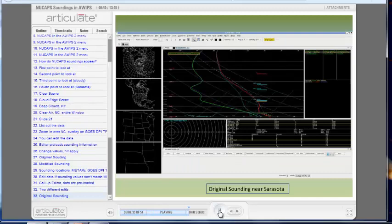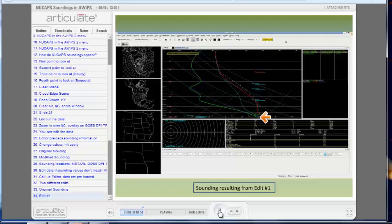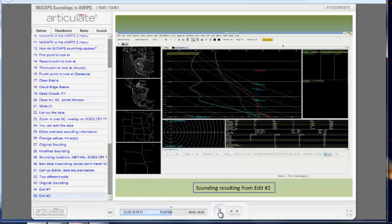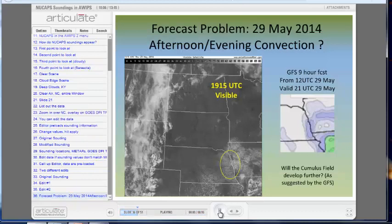Again, here's the original sounding. This is the sounding from Edit 1. We have a warmer dew point here. Notice how the LFC and the LCL have dropped, and the equilibrium level has risen. You would expect an increase in CAPE for such a change. And increasing the surface temperature in Edit 2 also changes the sounding. This is a more forecast-specific use for the soundings.